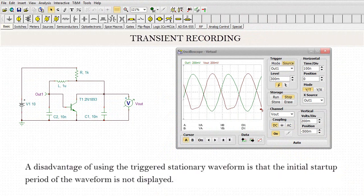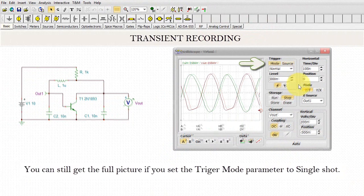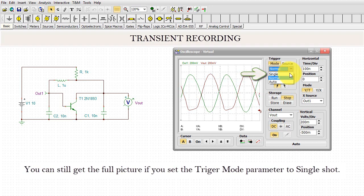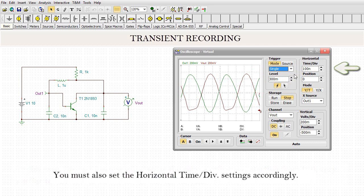Transient Recording. A disadvantage of using the triggered stationary waveform is that the initial startup period of the waveform is not displayed. You can still get the full picture if you set the trigger mode parameter to Single Shot. In this case, the oscilloscope will display the curves only once, starting from T equals 0, very similar to how it is done in the transient analysis. You must also set the horizontal time division settings accordingly.